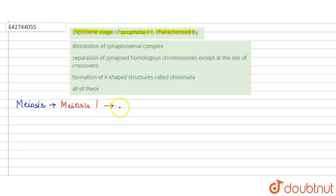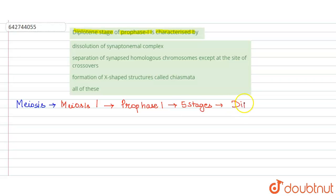In meiosis one there are basically four phases, out of which the first is prophase one. Prophase one further has five stages, out of which one is the diplotene stage. Diplotene stage is the second last stage of prophase one.